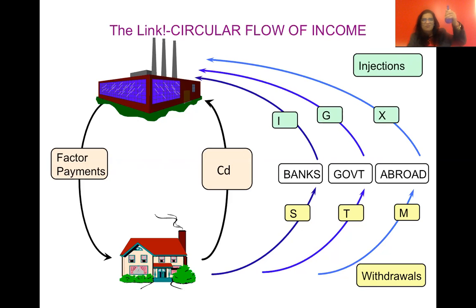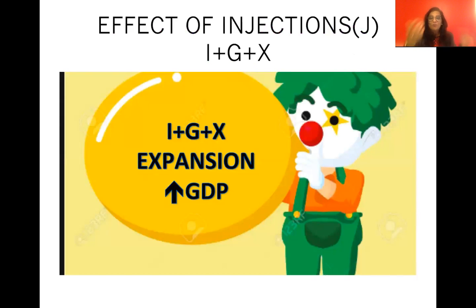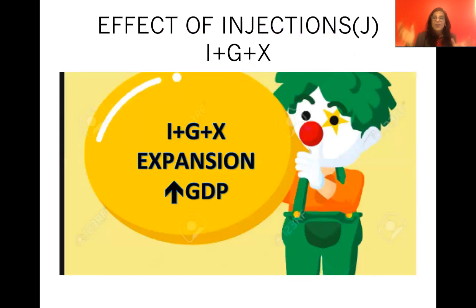Think of the balloon again: when you squeeze the air out, the balloon contracts — the economy is in contraction. On the other side, if more money is coming in, the balloon expands. So: if money moves out of the flow the economy contracts; if money moves into the flow the economy expands. The three injections are investment, government spending, and exports. The three withdrawals are savings, taxes, and imports.